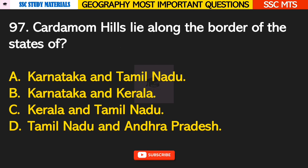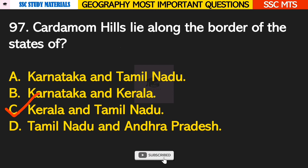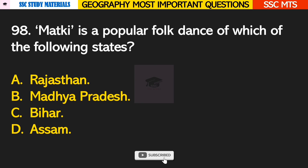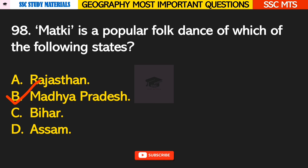Question number 97: Cardamom Hills lie along the border of the states of? Answer C — Kerala and Tamil Nadu. Question number 98: Matki is a popular folk dance of which of the following states? Answer B — it is a folk dance of Madhya Pradesh.